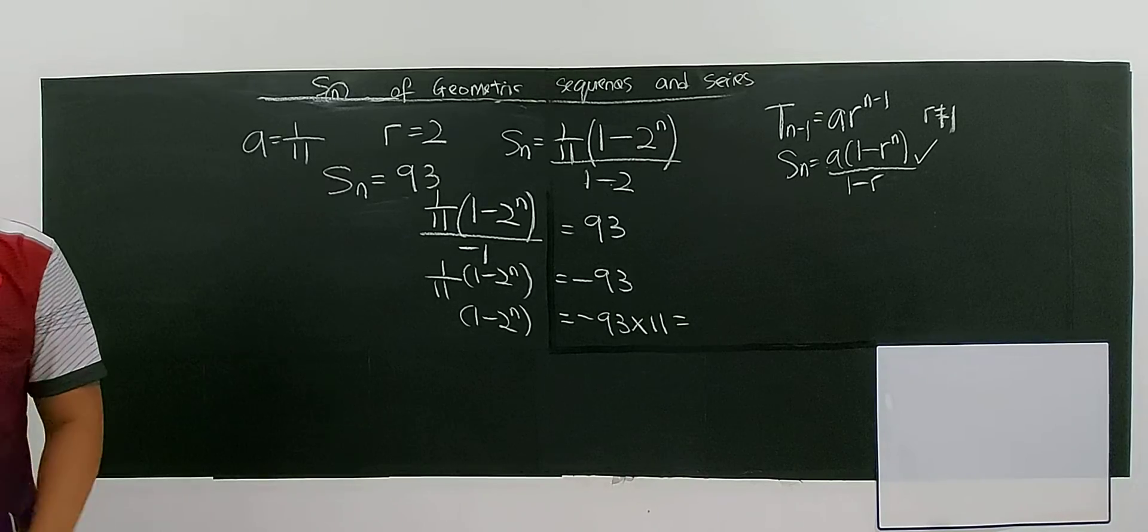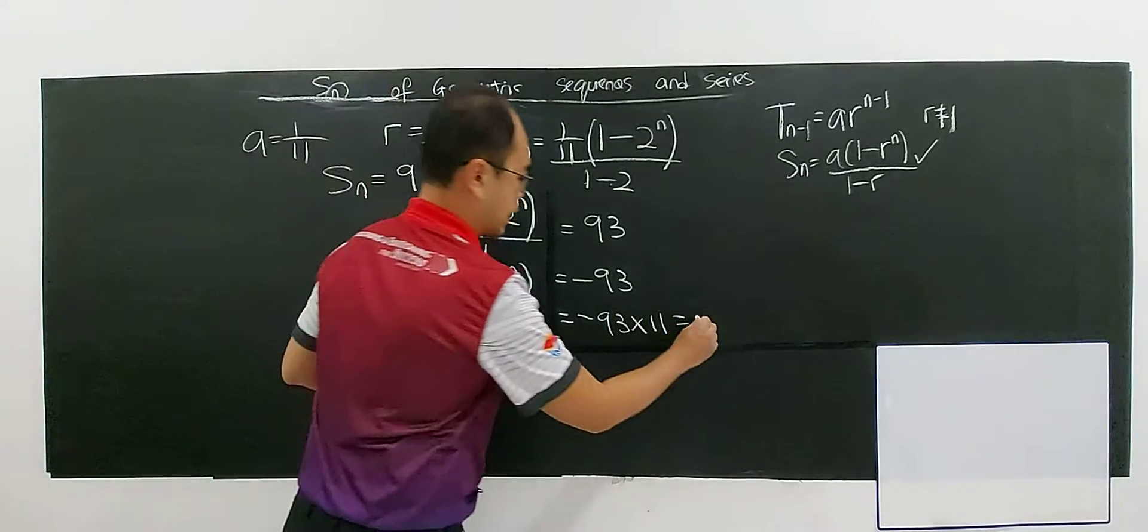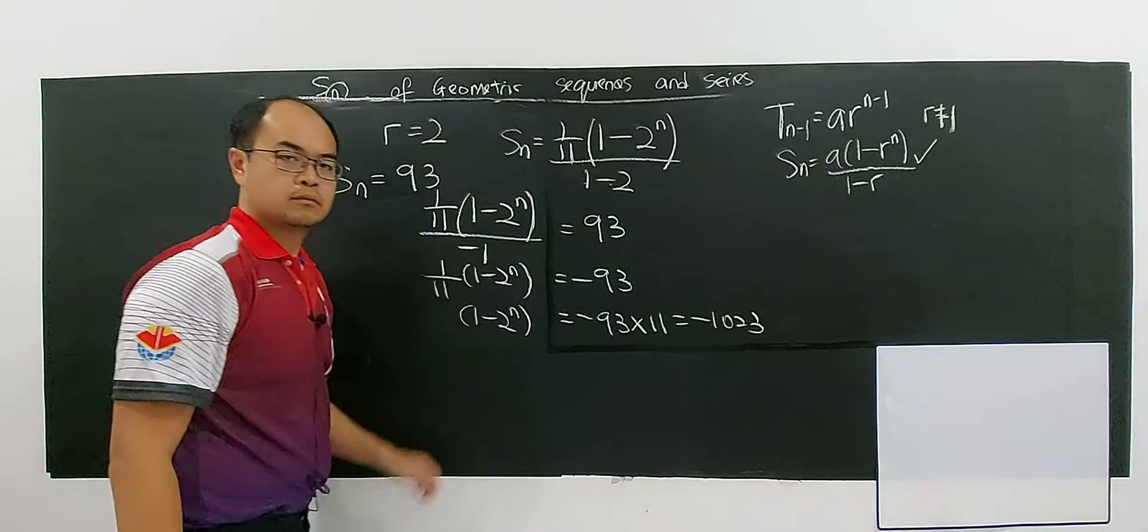So you have 1, 0, 2, 3. Negative 1, 0, 2, 3.